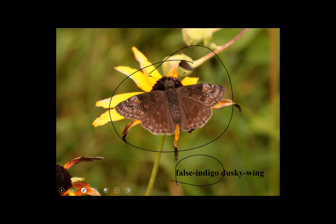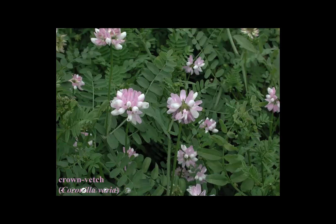It turns out the false indigo dusky wing is also able to feed — fortunately for it — on a weedy plant called crown vetch. Crown vetch is a midsummer plant that's really common in barren soil, planted a lot for reclamation of barren lands and highway embankments.